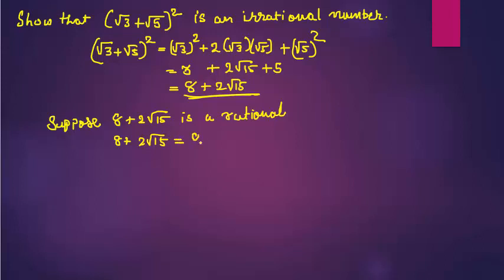Where a and b are integers. What we have to do is take this 8 to that side, so 2√15 equals a/b minus 8.